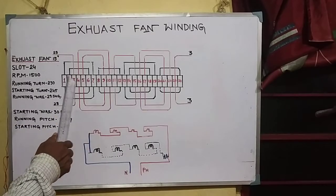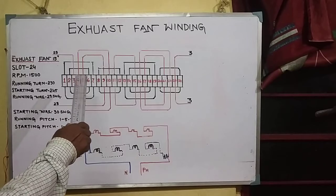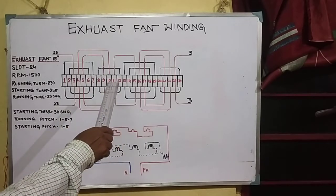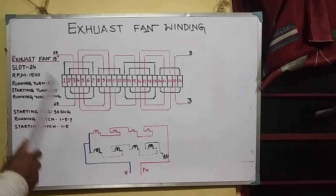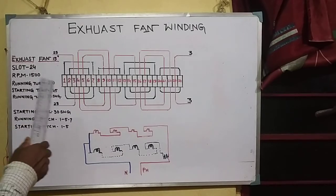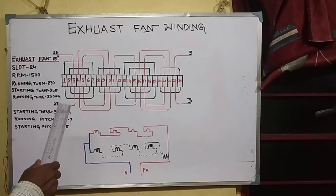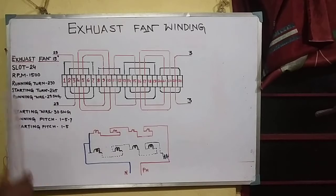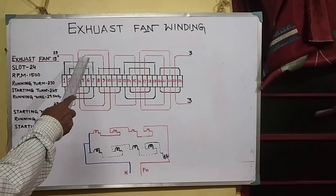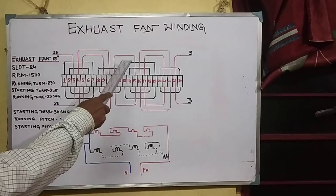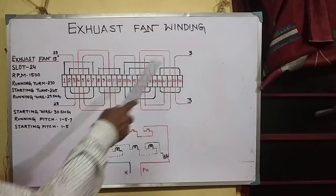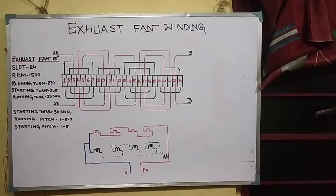This is a single-phase exhaust fan winding. The bottom layer is 23, then the bottom layer is 15. It is 24, the bottom layer is 25. Then 6, 6, 6 — the bottom layer is fine. It is 5 here. 5-statement, 6-statement coil groups.